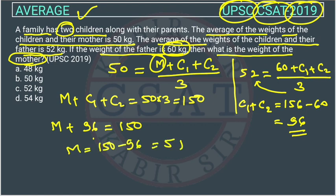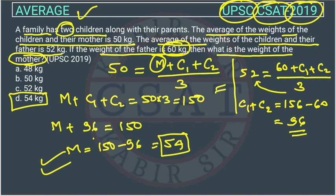We put the value of C1 + C2 = 96 into the first equation: m = 150 − 96 = 54 kg. The answer is option D. It was a very easy question — average questions are easy if you understand the basic concept, and all these calculations can be done in less than one minute.